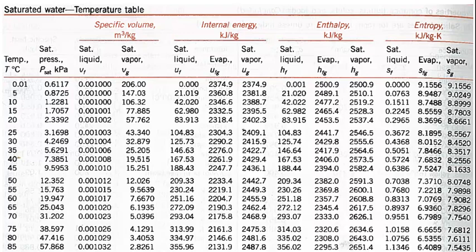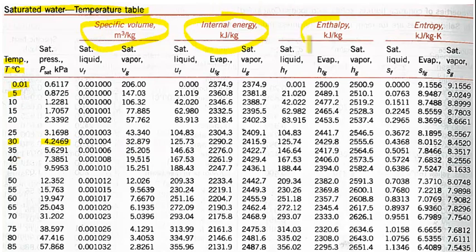The first thing to look at is the different tables we've got. The first is the saturated water temperature table. What this table does is organize the data by particular temperatures. So if you knew a temperature — for example, 30 degrees C — you could look over and find the saturated pressure and all the different properties such as specific volume, internal energy, enthalpy, and entropy.